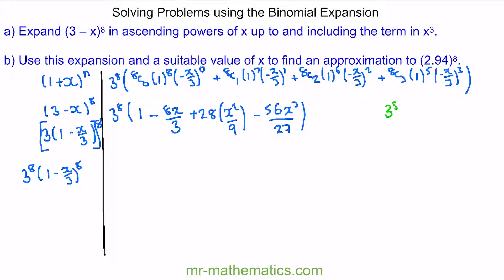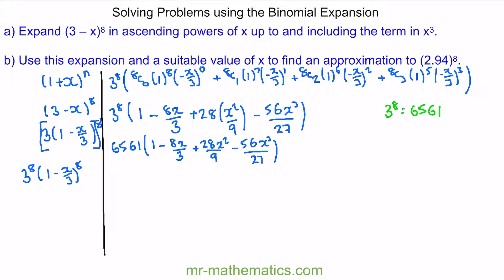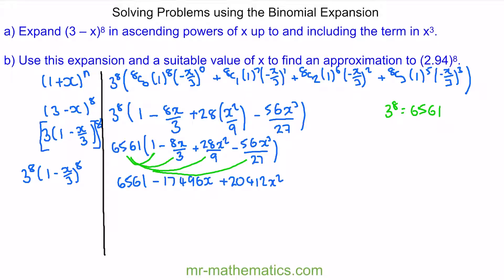We can work out 3 to the power of 8 as 6,561. Writing this on the outside of our bracket and expanding, we get: 6,561 minus 17,496x plus 20,412x squared minus 13,608x cubed. So this is our full expansion.